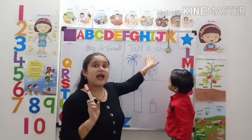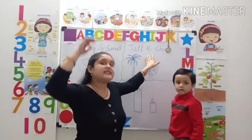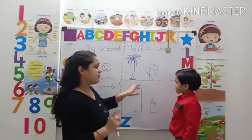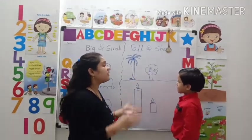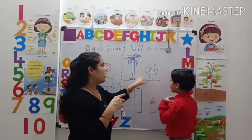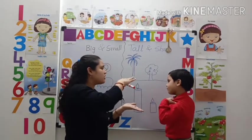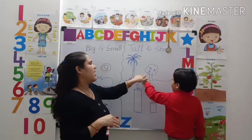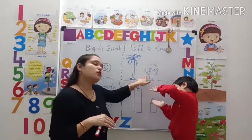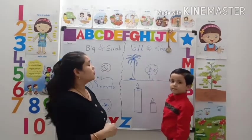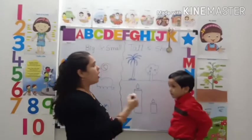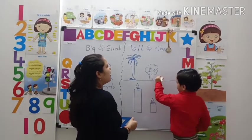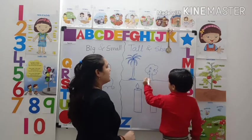Now you can easily identify tall objects and short objects. Now, please tell me which one is short? In this tree, which one is short? Yes, this tree is short. You can take the short object. You have to take the small short object.